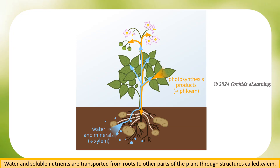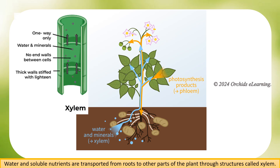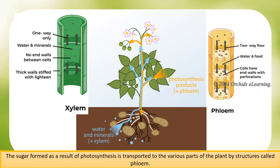Water and soluble nutrients are transported from roots to other parts of the plant through structures called xylem. The sugar formed as a result of photosynthesis is transported to the various parts of the plant by structures called phloem.